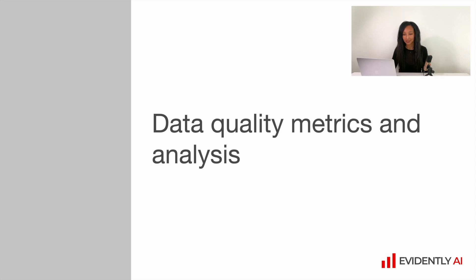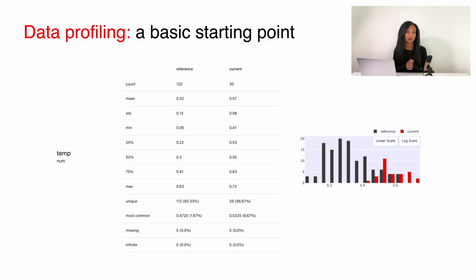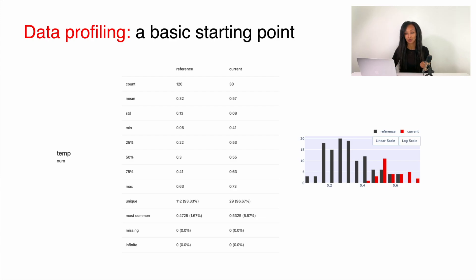So, data quality metrics and analysis. I would suggest you start from data profiling. Based on the data type, you can come up with quite a lot of descriptive statistics. For example, for a numerical feature — here you can see the example with temperature — you can calculate statistics like minimum, maximum values, sum, quantiles, unique values, most common values, share of missing values, etc. You can see the distribution and compare it between the reference data and the current batch, or between the previous batch and current batch, and check whether the data looks exactly as you expected.